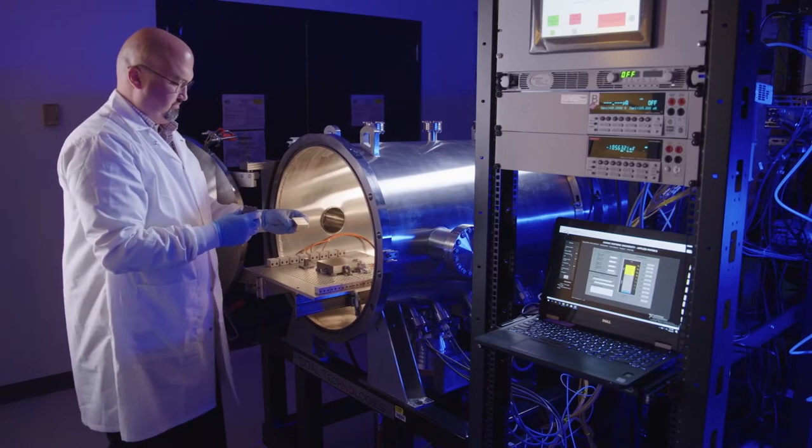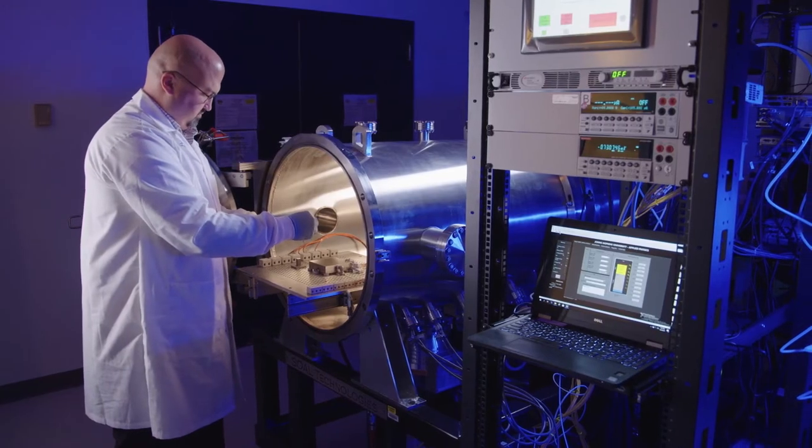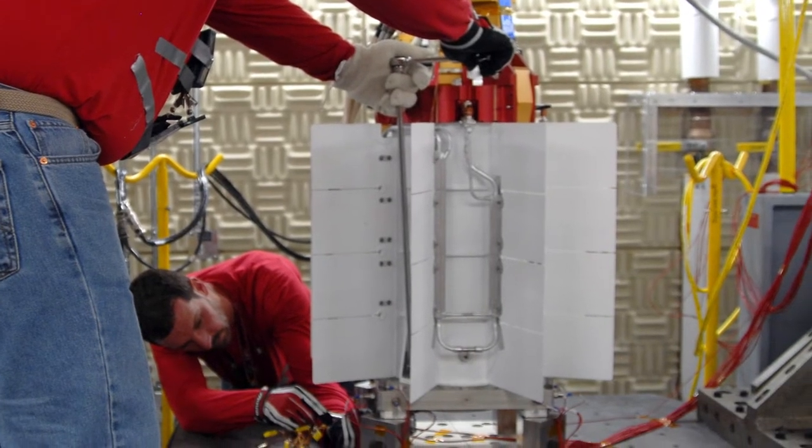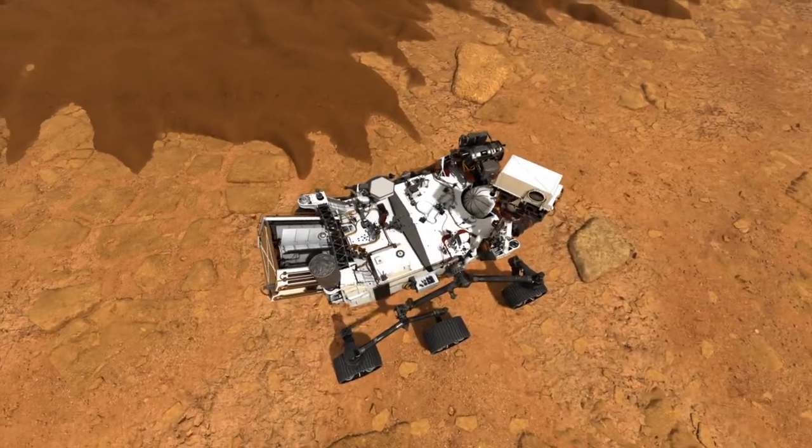These materials are part of a family of compounds known as semiconductors. In the RTGs built by the U.S. Department of Energy and used by NASA, the hot side is provided by the heat energy emitted from the natural radioactive decay of plutonium dioxide.